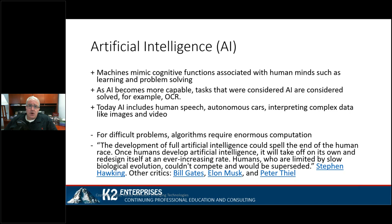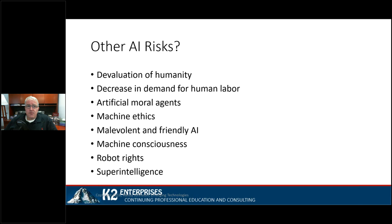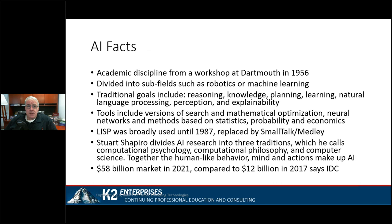There are some risks associated with AI: devaluation of humanity, decreased demand for human labor, artificial moral agents, superintelligence, and robot rights. There are many movies that have taken on this subject — Her, I Robot, and many others. But artificial intelligence isn't new — it started back in 1956 at Dartmouth. It's normally divided into robotics and machine learning, with goals including reasoning, knowledge, planning, learning, natural language processing, perception, and explainability.